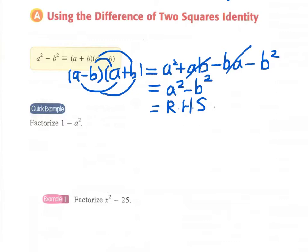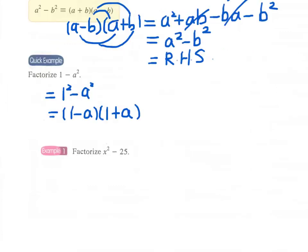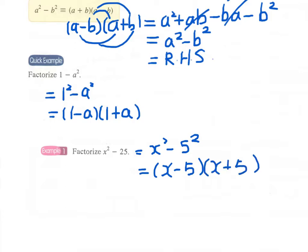Now let's look at a very simple example. Factorize 1 minus a squared. Since 1 is a square number, we write it as 1 squared minus a squared, and therefore we get (1 minus a)(1 plus a). Next, factorize x squared minus 25. Since 25 is the square of 5, we get (x minus 5)(x plus 5). Easy.